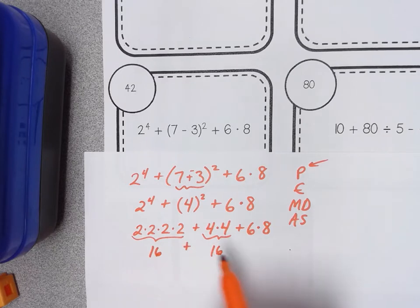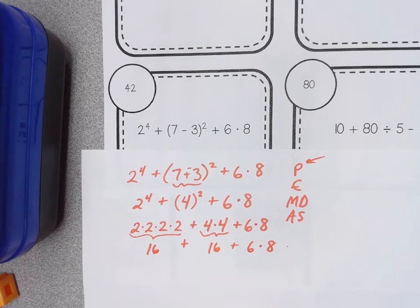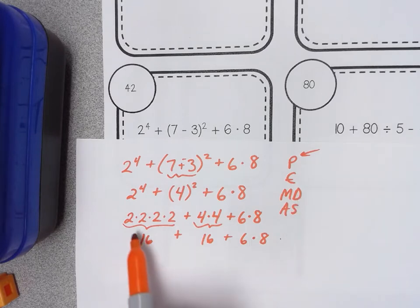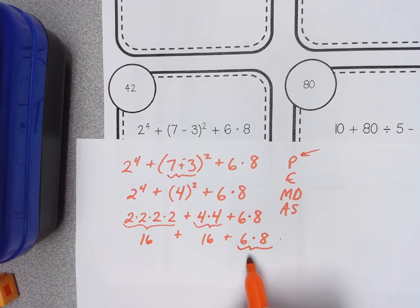I'll bring down my addition that's happening there and don't forget about the back here 6 times 8. If I think of PEMDAS I still have some multiplication and division to deal with moving from left to right. I took care of those exponents but at the back here 6 times 8 that's the multiplication I can do in my head. 6 times 8 is 48.